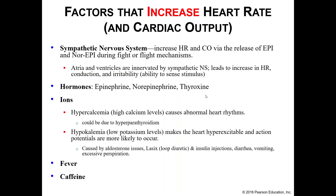Thyroxine, your metabolic hormone, can also increase heart rate — if you increase your metabolism, you will increase your heart rate. We also have ions: hypercalcemia — high calcium levels — affects the plateau phase. Hypokalemia — low potassium levels — makes the heart hyper-excitable, messing with action potentials and the repolarization phase, making action potentials more likely to occur.